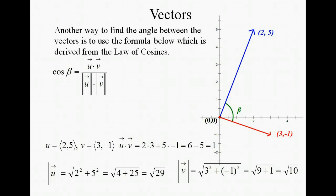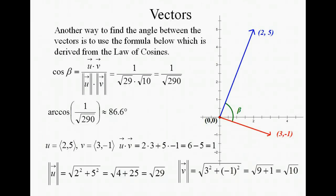Now let's go back and plug into our cosine beta formula. The dot product is 1, the magnitudes are square root of 29 and square root of 10. So we end up with 1 over the square root of 290. Now, isolating beta, we're going to take the arc cosine, or the inverse cosine function, of 1 over the square root of 290. And we get the 86.6 degrees that we found earlier. So now you can see that this formula works.